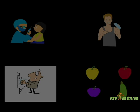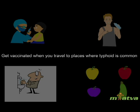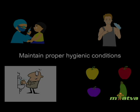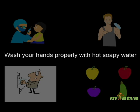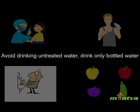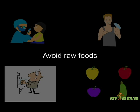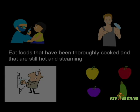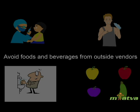Typhoid is not a serious disease and can be controlled by following certain preventative measures. Get vaccinated when you travel to places where typhoid is common. Maintain proper hygienic conditions, wash your hands with hot soapy water, avoid drinking untreated water, and drink only bottled water.